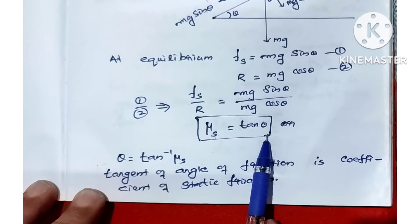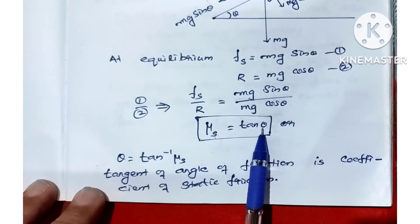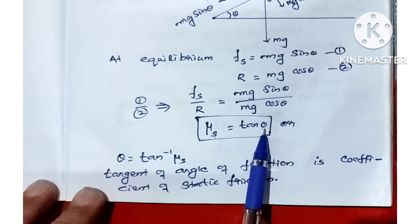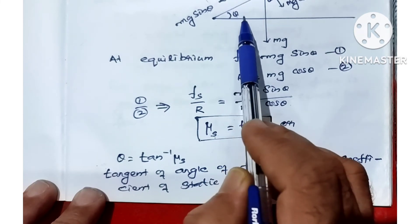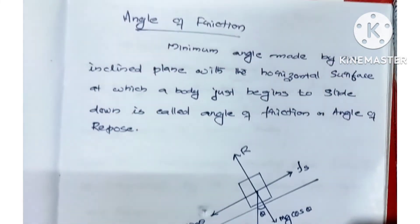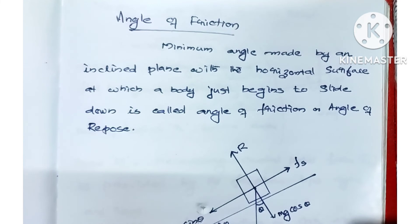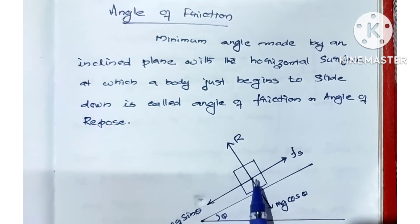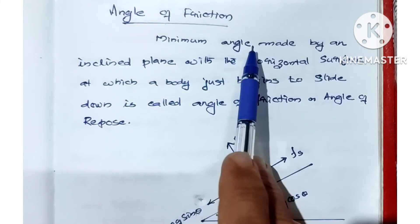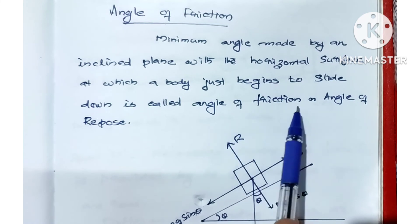The coefficient of static friction is mu s. Therefore mu s is equal to tan theta. This theta is the angle of friction. The angle of friction is the minimum angle made by an inclined surface with the horizontal surface at which the body just begins to slide down — this is called the angle of friction.